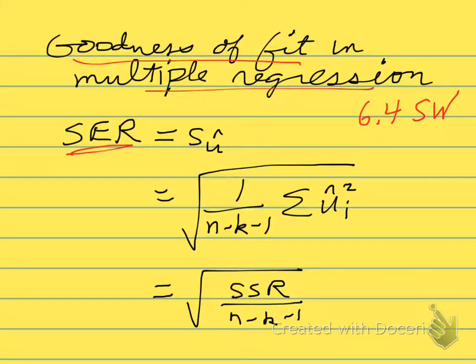We calculate that as the square root of the sum of squared residuals divided by n minus k minus 1. The only difference here between the SER of the single variable regression is this n minus k minus 1. Instead of n minus 2, we have n minus k minus 1. If k were equal to 1, if we only had one regressor, so k is the number of regressors, not including the constant.